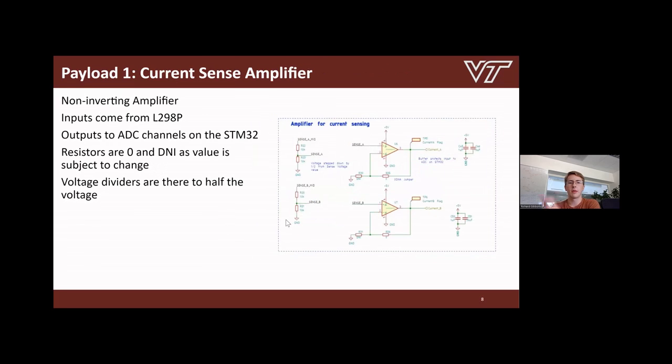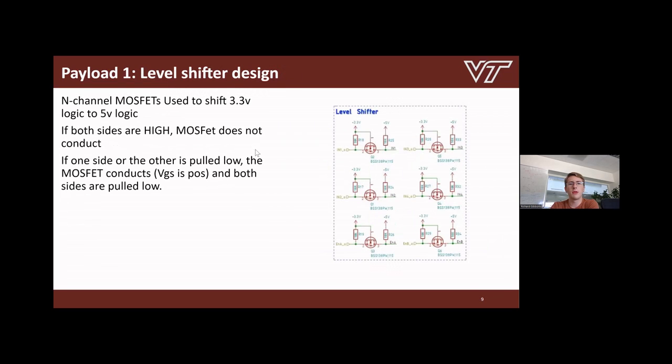This is our current sense amplifier design. Nothing too complicated here - we used a non-inverting amplifier to take the small current sense signal coming from the L298 chip and apply gain to that, to multiply that signal so we can use the full dynamic range of the ADC input on the STM32. We made the resistors for the feedback just a jumper and do not insert, because it's the same footprint on the board. We can just add whatever resistors we want as long as it's a certain given package. We also added voltage dividers on the output in case we needed to step down the voltage of that signal coming from the L298 chip.